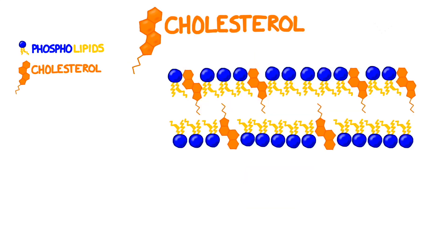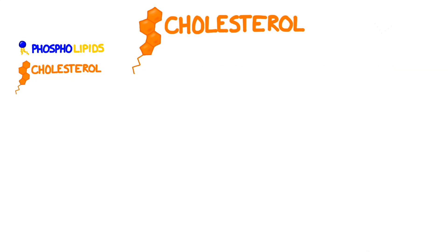In between every few phospholipids is a molecule you've probably heard of — cholesterol. Despite what you might see in all those pharmaceutical commercials, cholesterol is actually really important. It helps the cell membrane maintain an appropriate level of fluidity by managing the space between phospholipids. At room temperature, the cell membrane has about the same consistency as vegetable oil, which is ideal.